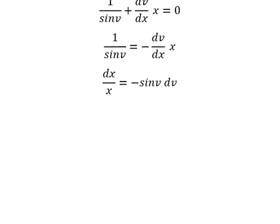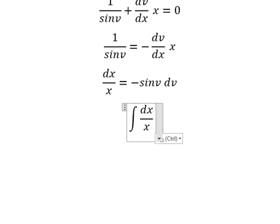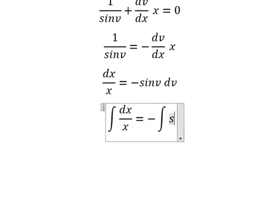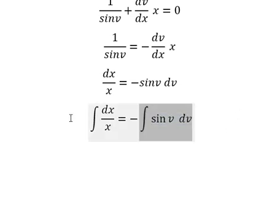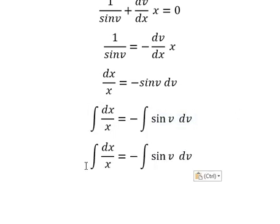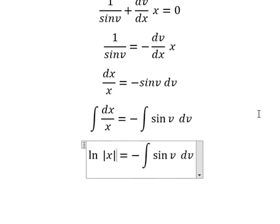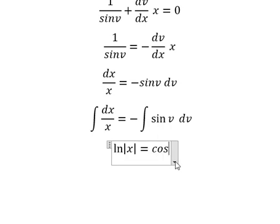Next we put the integration for both sides. So the integration of this one we have ln of the absolute value of sine. So the integration of this one we have ln of the absolute value of sine.